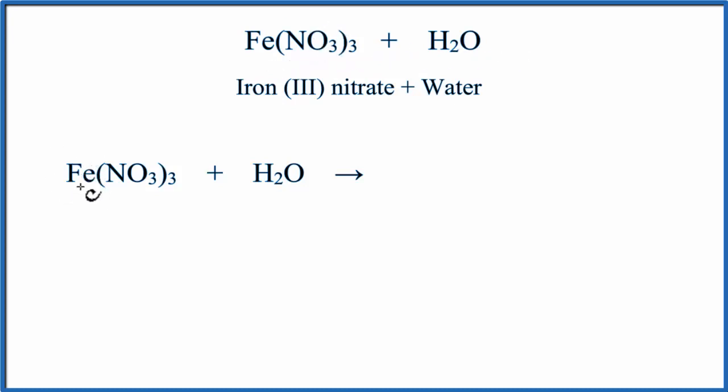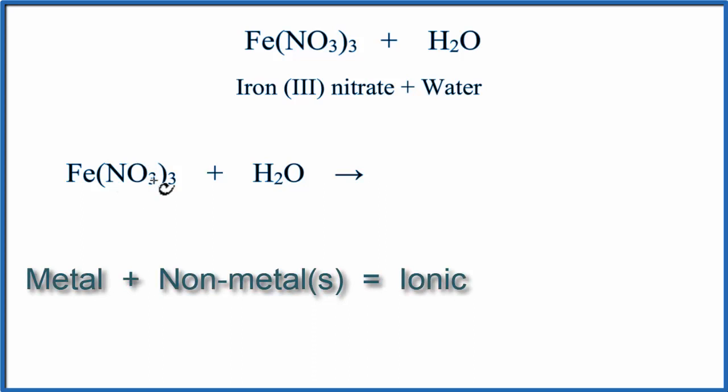Iron, that's a metal, it's a transition metal. And then NO3, those are non-metals. So we have a metal with a group of non-metals. This is a polyatomic ion, it's called the nitrate ion. So when we have a metal and non-metals, that's an ionic compound, and they often dissolve in water.